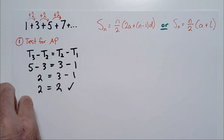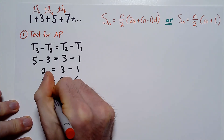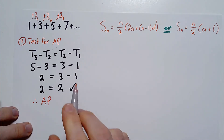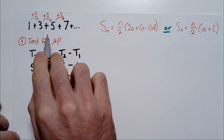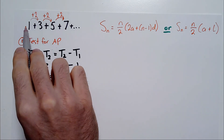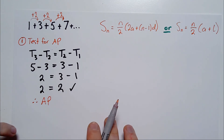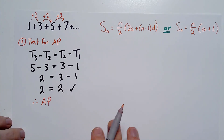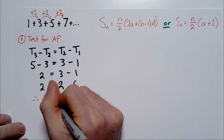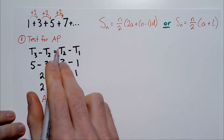Therefore, we have an AP — and this is what you always say at the end. It's not a GP, a geometric progression or sequence, because that's where the terms would be multiplying by the same number to get to the next term. Here there is no common ratio, represented by R. We're concerned with the difference, represented by D. So we have an AP, given the test was satisfied.